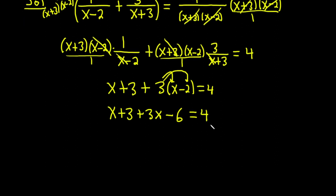We can combine like terms now. There's really a 1 in front of the x. So if you have 1x plus 3x, that's 4x. And then 3 minus 6 is minus 3. And over here on the right, we have a 4.